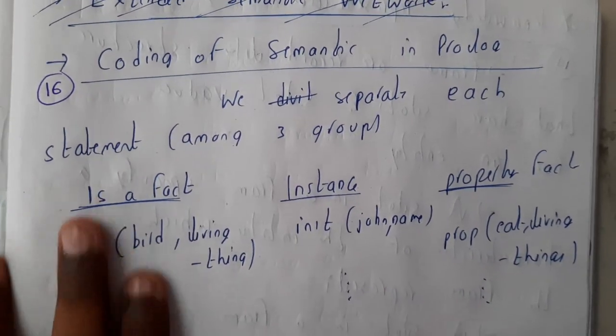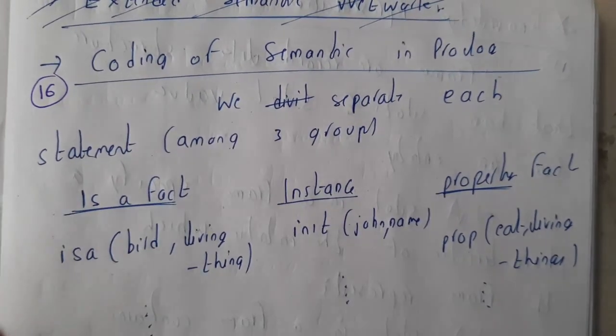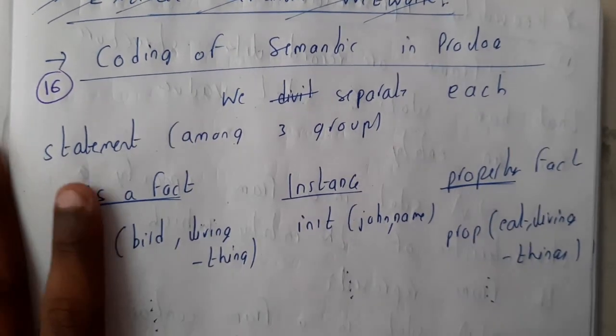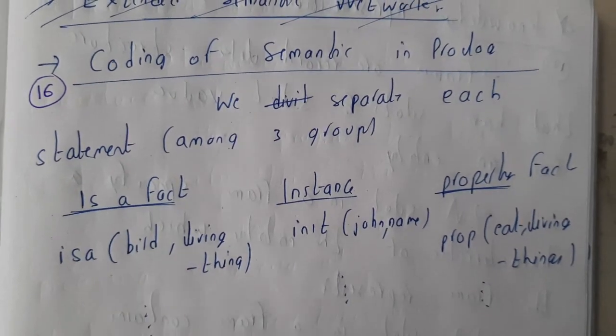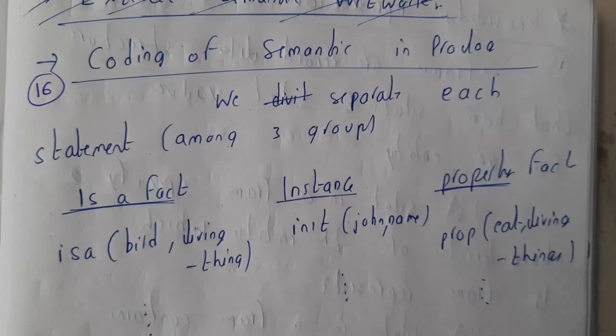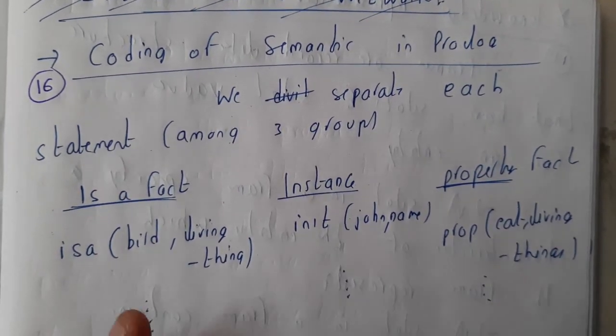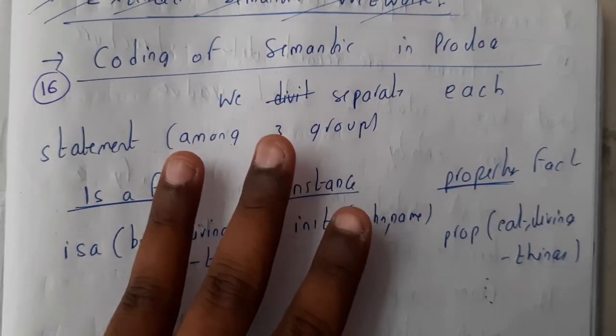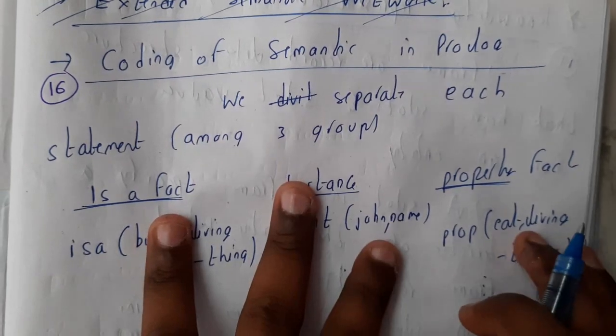Hello guys, we are back with our next lecture. In this lecture, let us go through some basic coding of semantic networks in Prolog. I'll be showing you how they are divided and how the structures work. Basically, each and every statement is divided among three categories.